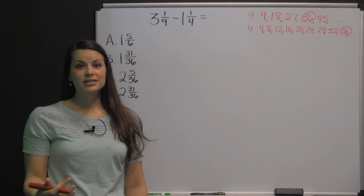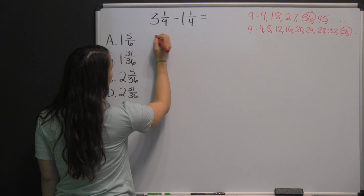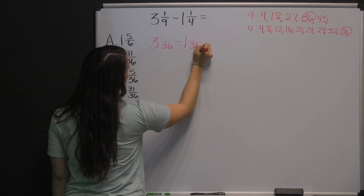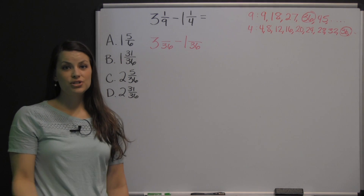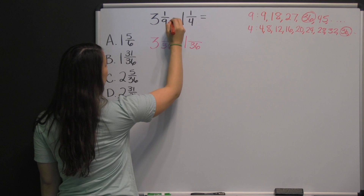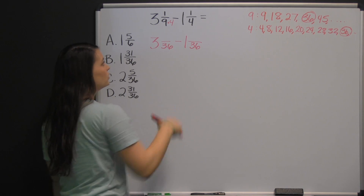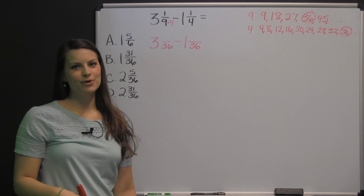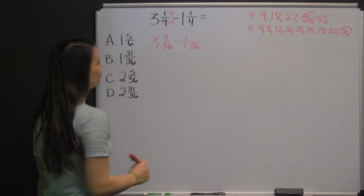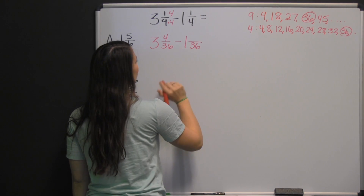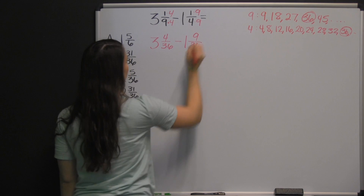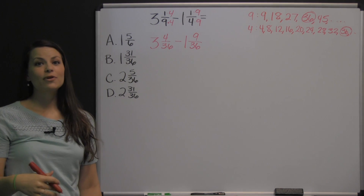Now we'll rewrite this problem using those least common denominators. Your whole numbers don't change, but your denominators do. You have to think about what you did to each denominator to change it into the new denominator. For nine, we had to multiply by four to get 36, so we do the same to our numerator: one times four — so one-ninth is equivalent to four thirty-sixths. Then, four times nine is 36, so we multiply the numerator times nine as well: nine thirty-sixths is equivalent to one-fourth.